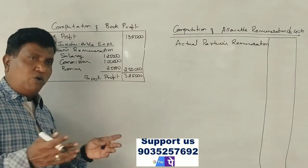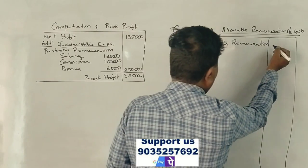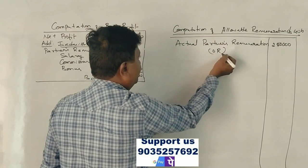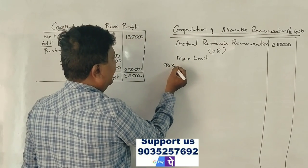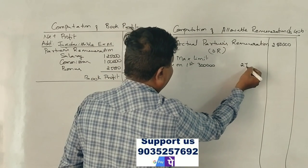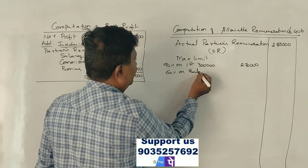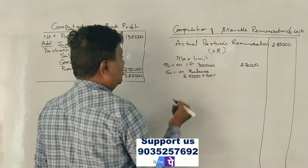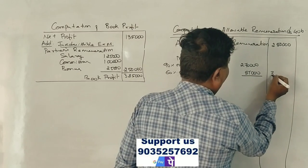Book profit is ₹3,85,000. Actual remuneration is ₹2,50,000. Now compare with the maximum limit: 90% on first ₹3,00,000 = ₹2,70,000; 60% on balance ₹85,000 = ₹51,000. Maximum limit = ₹3,21,000.